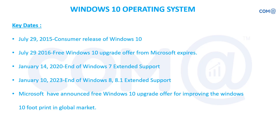Key dates: on July 29, 2015, Microsoft released Windows 10 for customer usage. In 2016, they launched a Windows 10 free upgrade offer, which expired after some time. Users who wanted to upgrade from Windows 7 or Windows 8 to Windows 10 could do so free of charge. Those who did not take advantage of this offer have to buy a separate Windows 10 license at the standard charge.